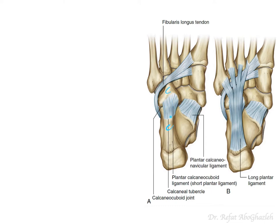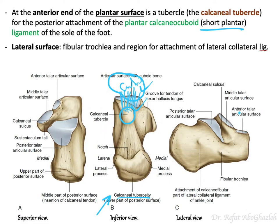Here you can see the cuboid and the calcaneus with the calcaneal tubercle, which is the attachment for the plantar calcaneo-cuboid or short plantar ligament. The long plantar ligament overlaps it — the short one sits just superior to it when viewing the inferior surface of the foot.